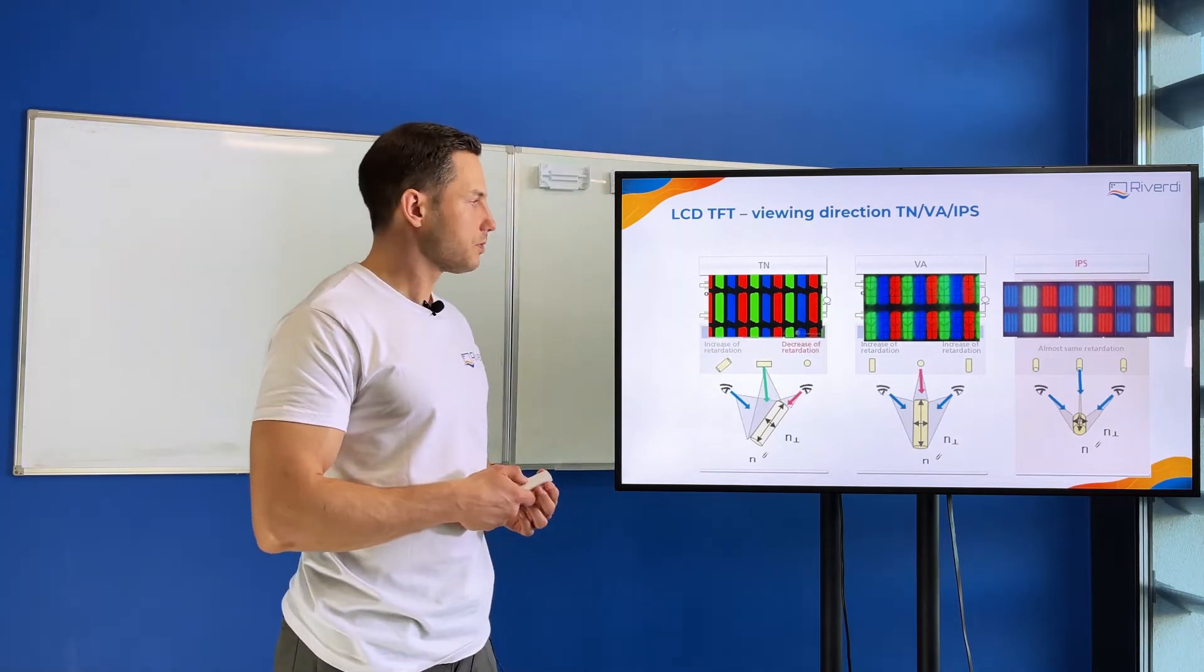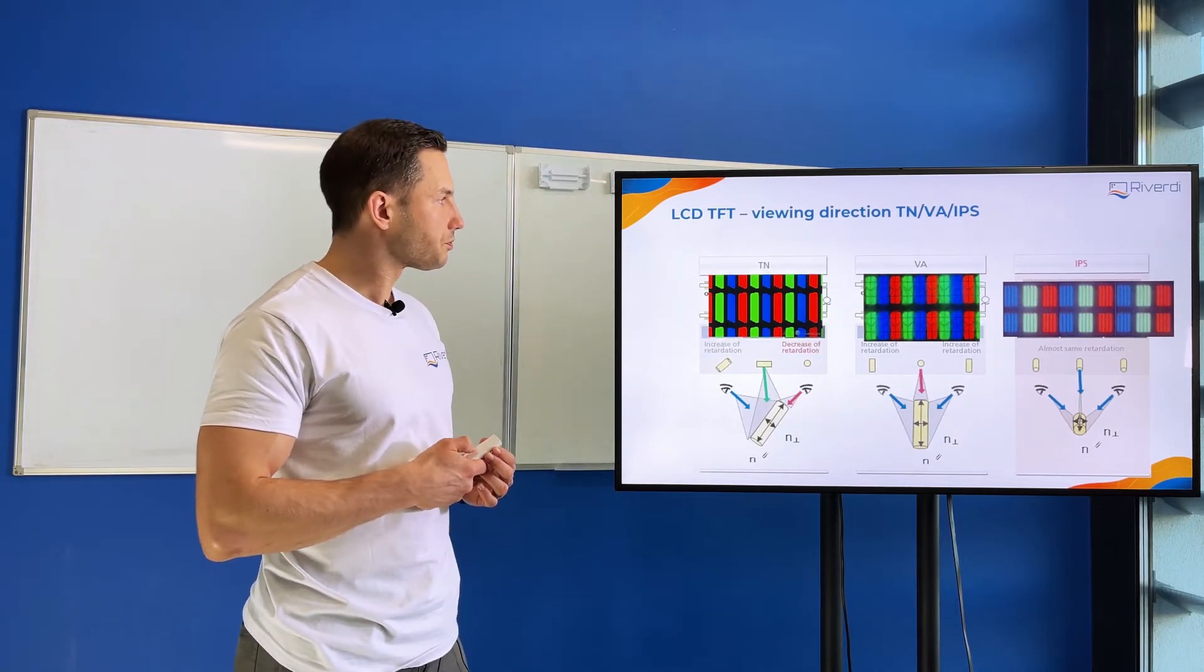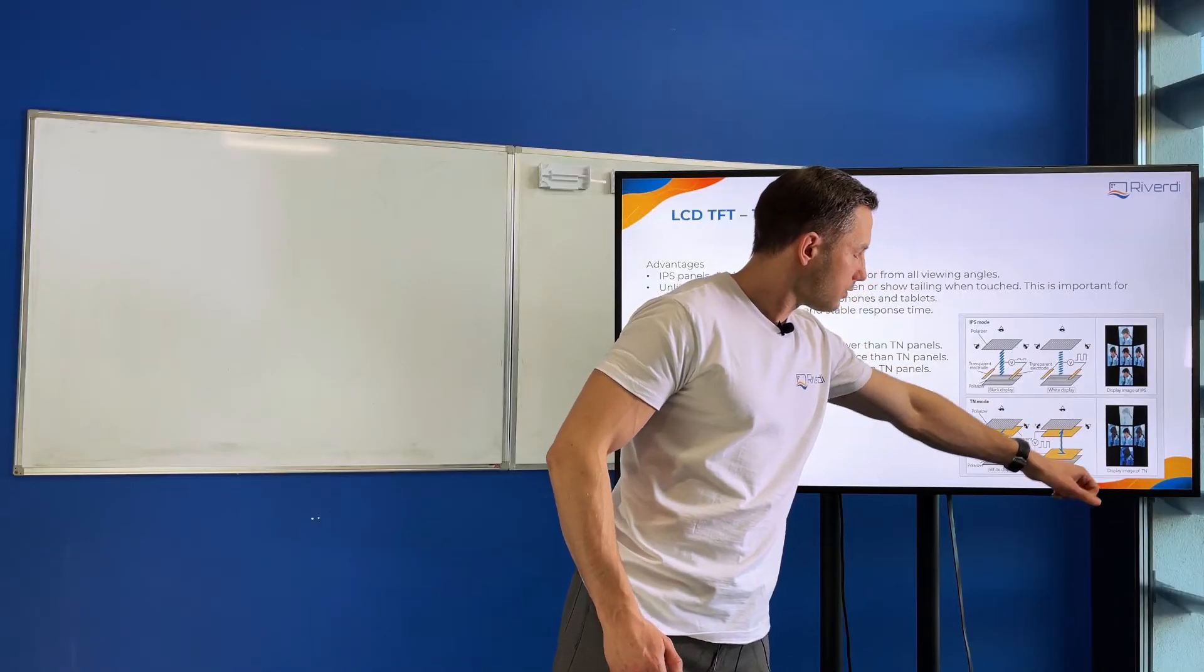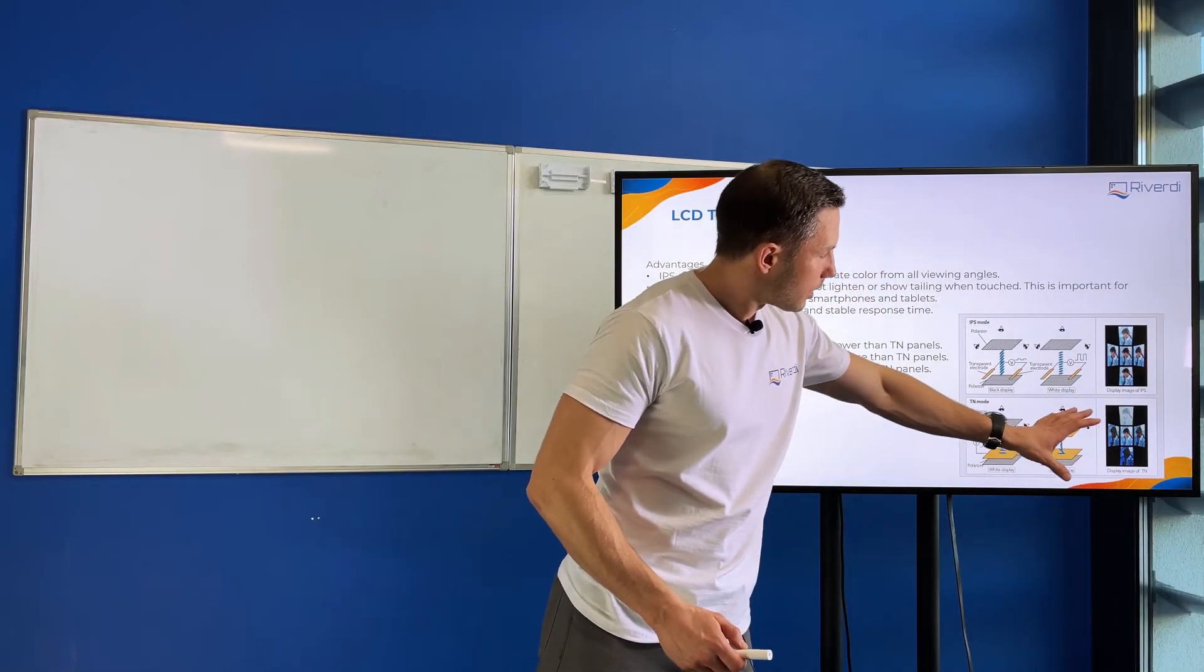Okay, so short summary of the IPS and TN display, or IPS or VA technologies. You can see here on the small image we have the TN display, and you see the gray scale inversion. So when you are moving as a viewer at different angles, the image is not very clear anymore to you.